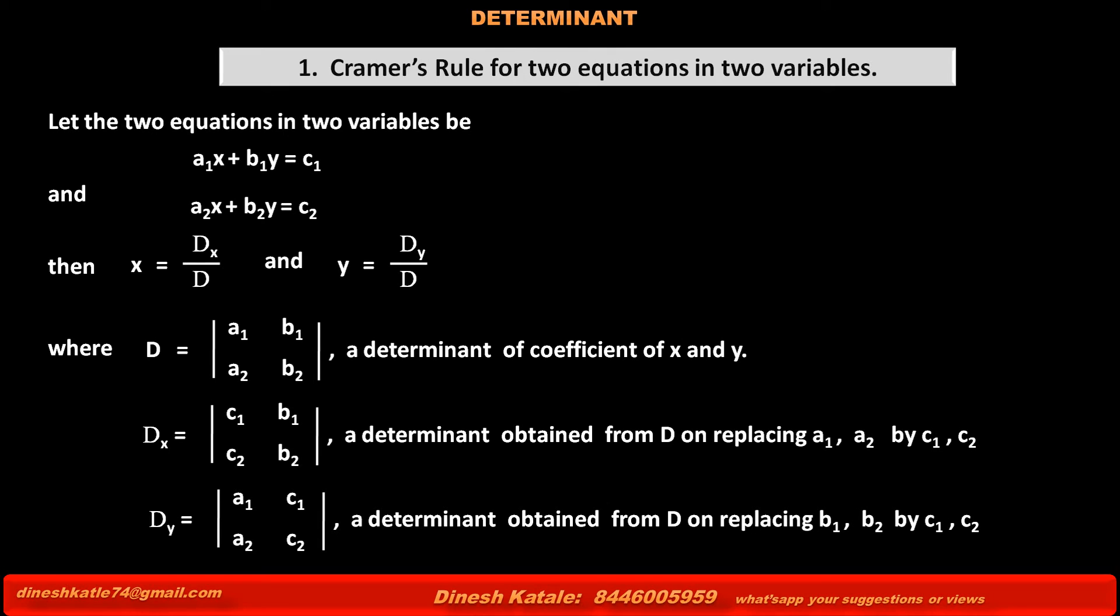Thus, using these three determinants D, Dx, and Dy, we can find the values of variables x and y of the given two equations by the formula x is equal to Dx upon D and y is equal to Dy upon D.